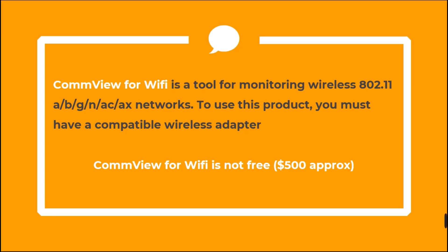We are going to use CommView for Wi-Fi for this tutorial. CommView for Wi-Fi is a tool used for monitoring wireless 802.11 networks. To use this product, you must have a compatible wireless adapter, and you can find the list of compatible adapters on the official website. Remember that this tool is not free and costs approximately 500 dollars. We are going to use the trial version, which is available for 30 days only.